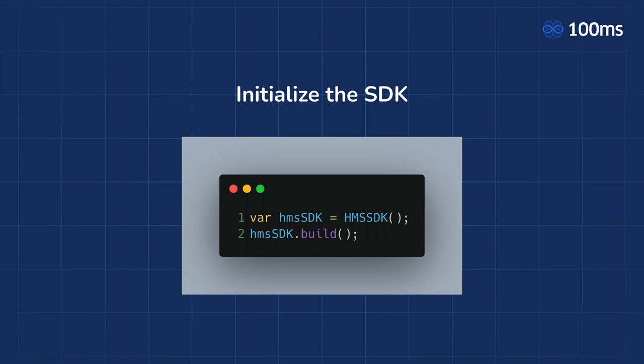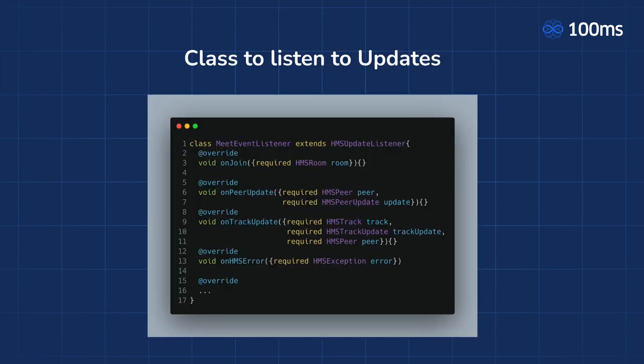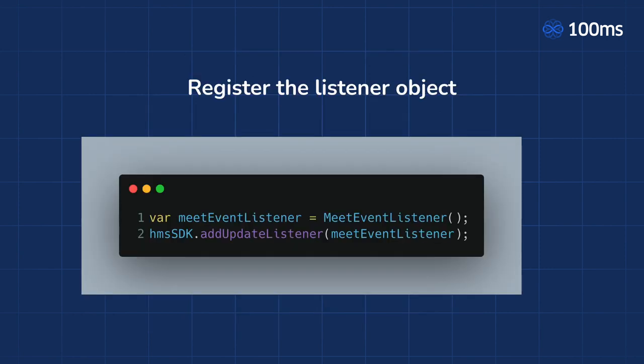You start by initializing the SDK. First, create an HMSSDK object, then call the build method on it. Then you have to create a class to listen to updates by extending the HMSUpdateListener class, and implement all of the methods it comes with. This class is where you listen and react to state changes within the room. Then create the object of the listener class and add it as an update listener to the SDK by calling HMSSDK.AddUpdateListener, passing in the listener as an argument.